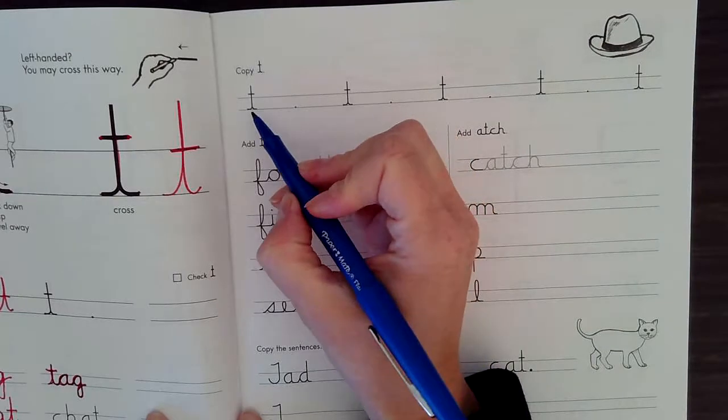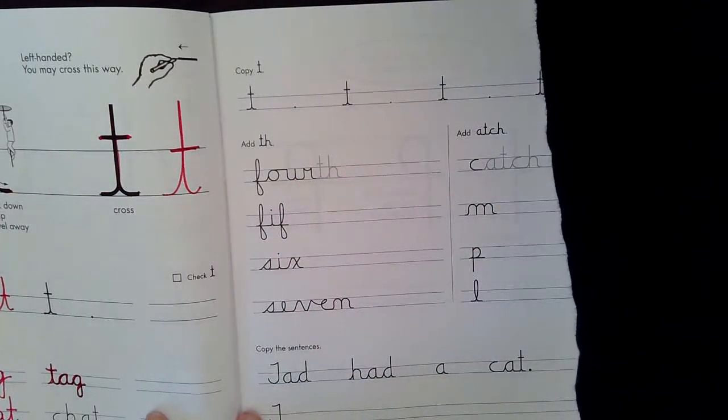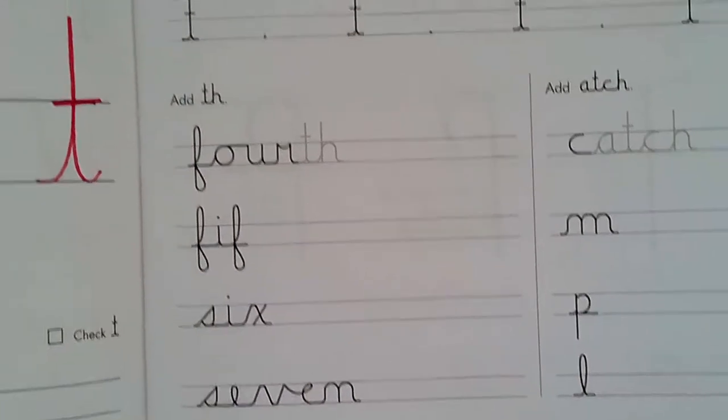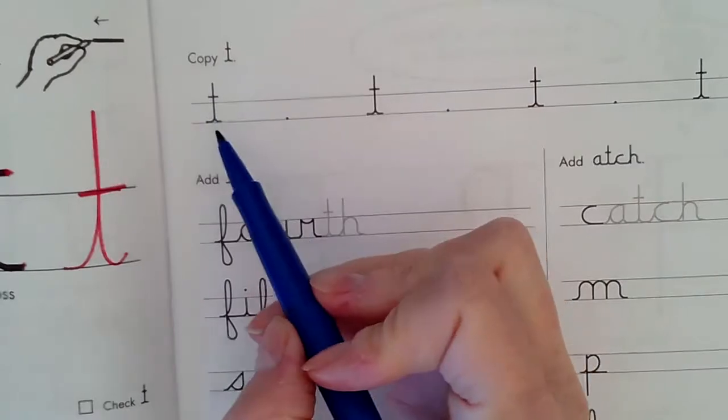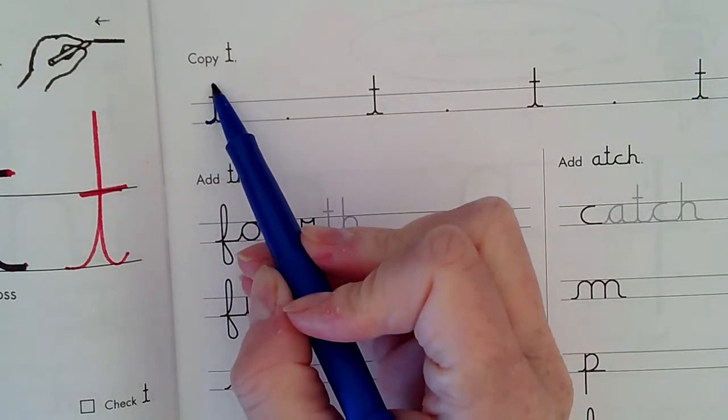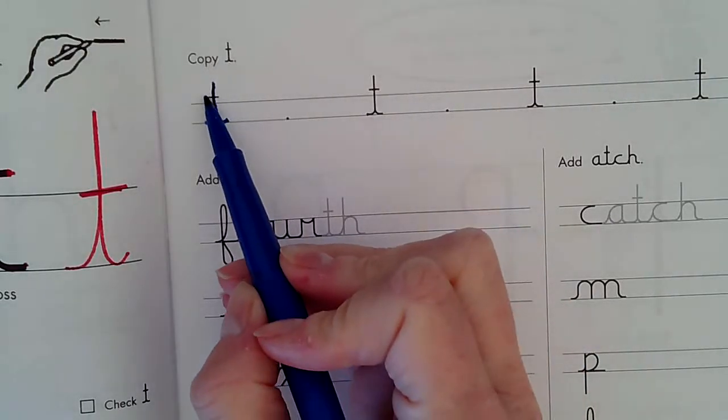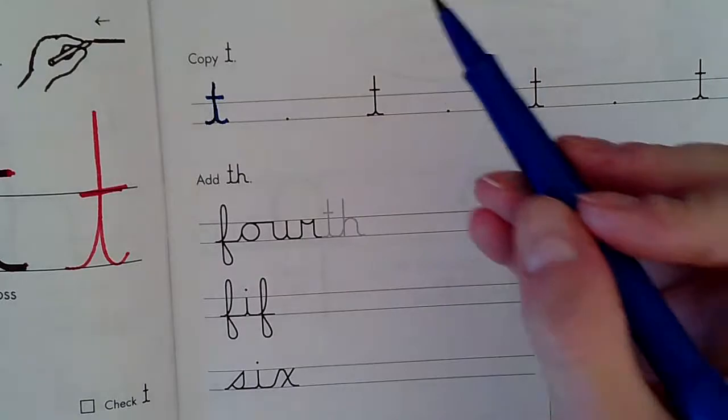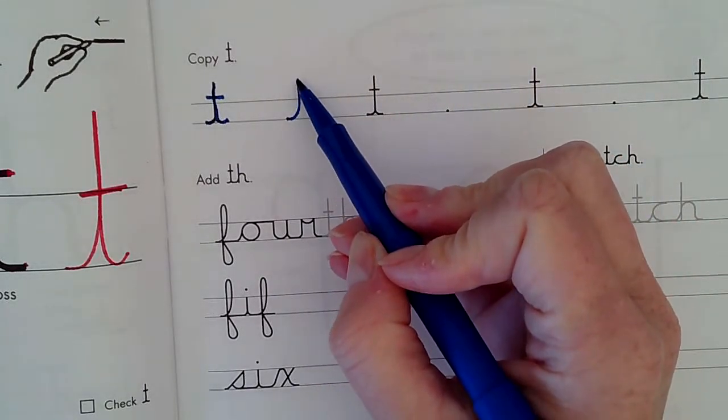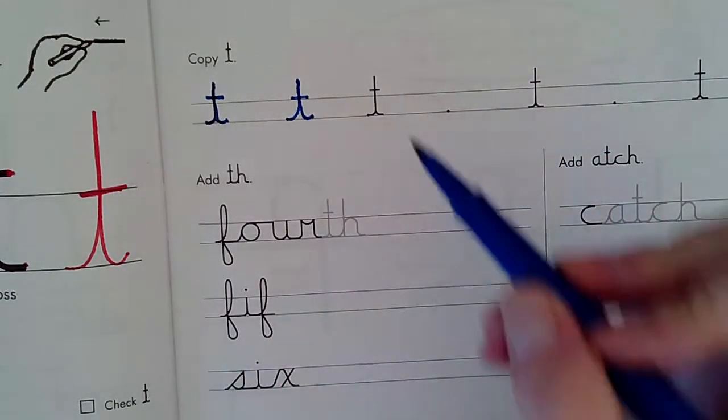If you remember, letter T starts with a little bit of a tail. Let me zoom in a little bit here. So I start here and I have a curve before I go straight up and straight down, and then another curve, and then I cross my T. I'll start at the dot here, I'll make a curve, straight line up, come straight back down and another curve, across my T.